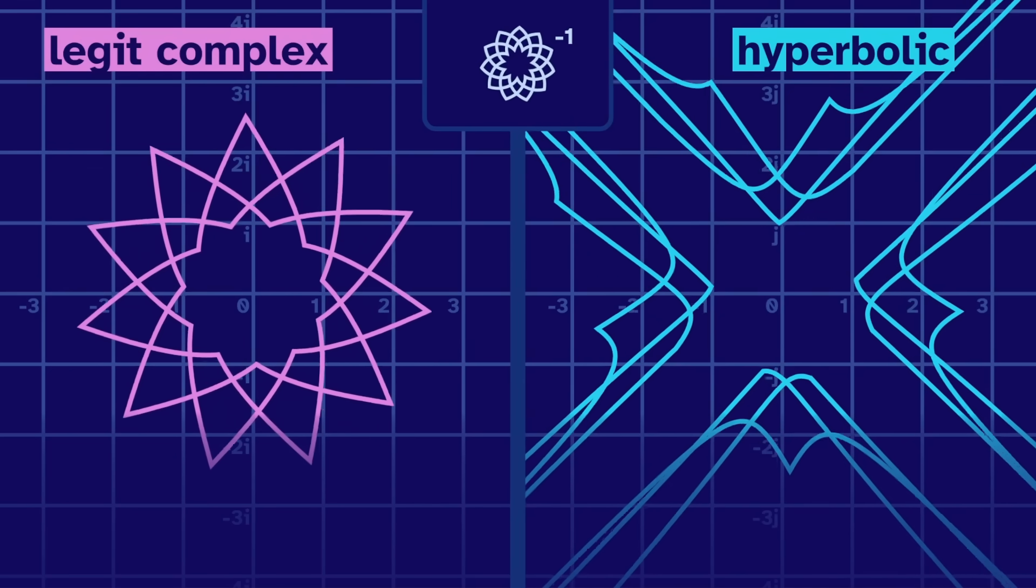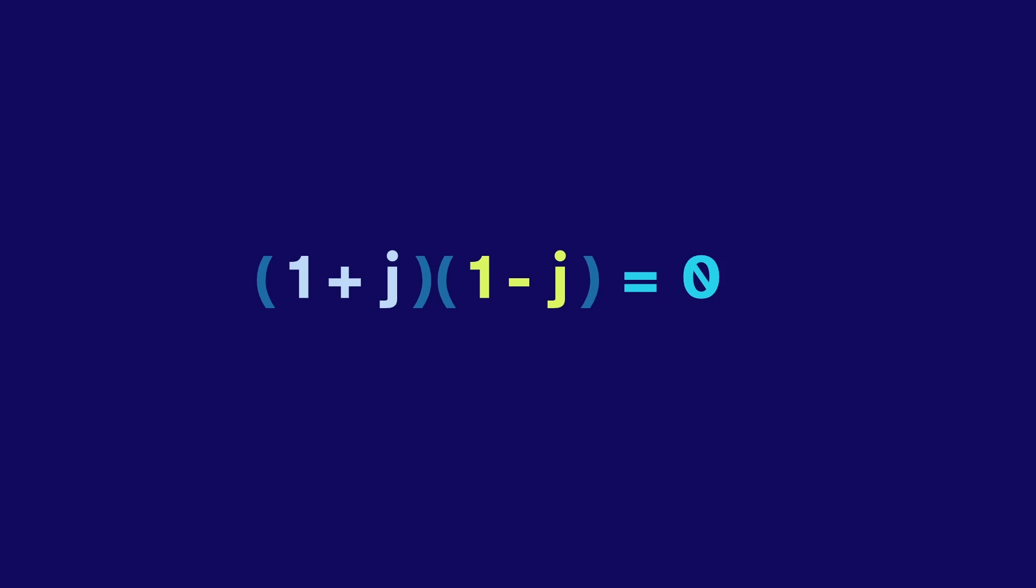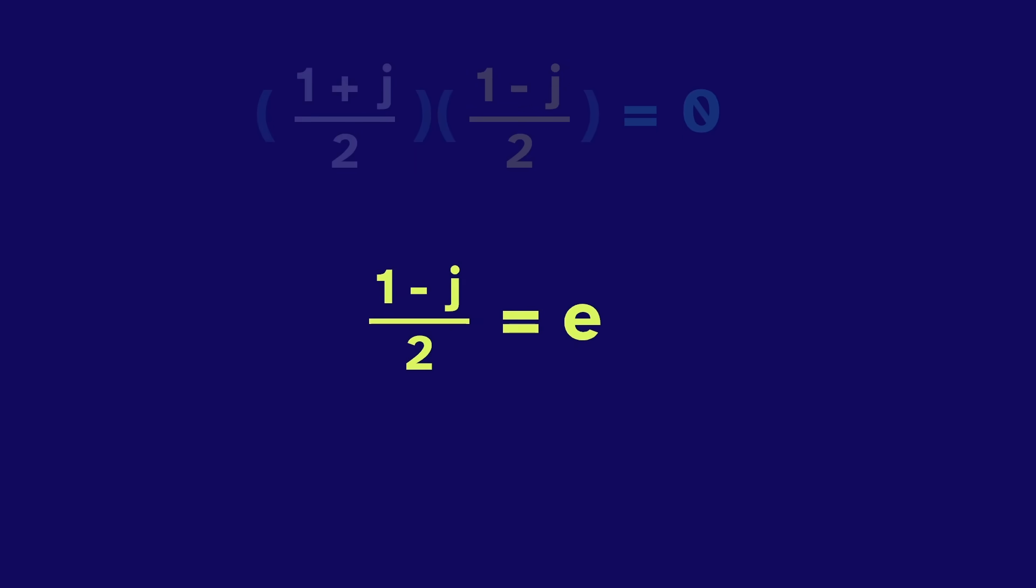And let's take a further look at this equation. It's weird that two non-zero numbers multiply to zero. These numbers are special, and they're even more special if we cut them in half. This is called e. Watch what happens when we square it. We do a little alge, then end up with 1 minus j over 2. The same as e. E equals its own square.